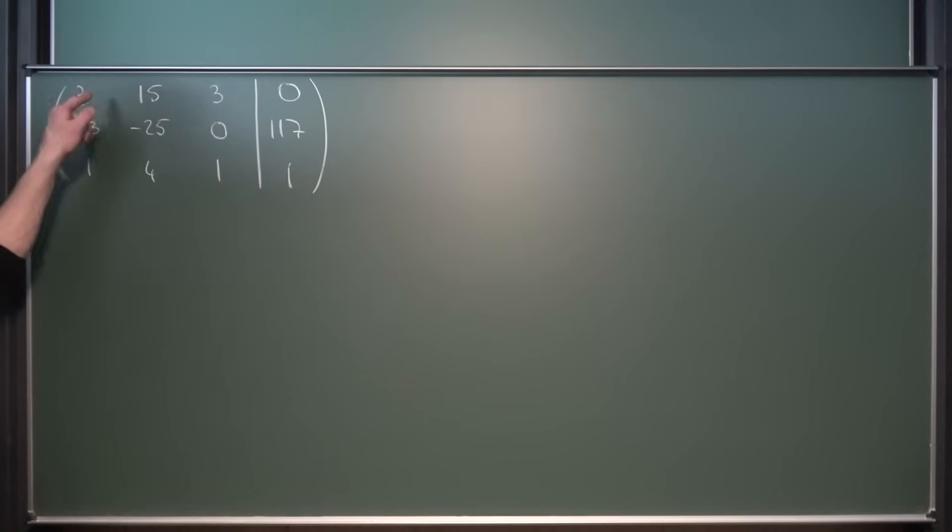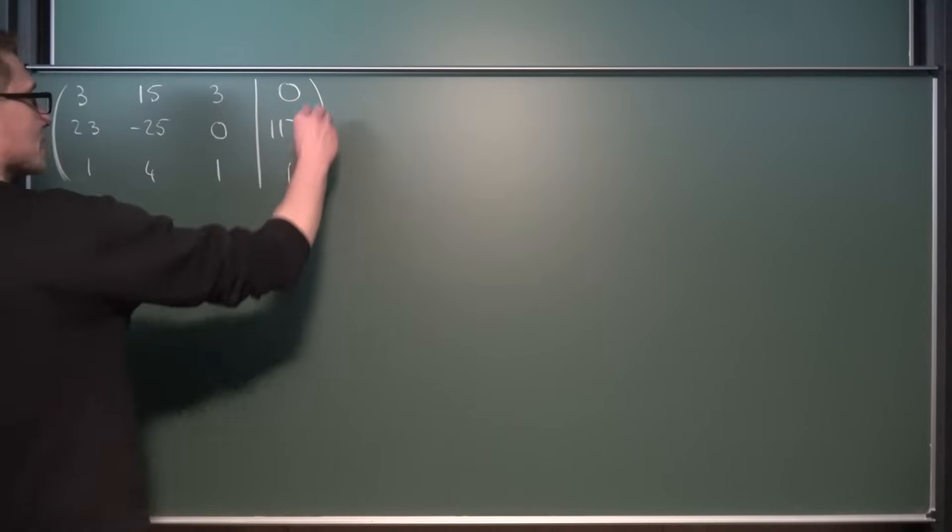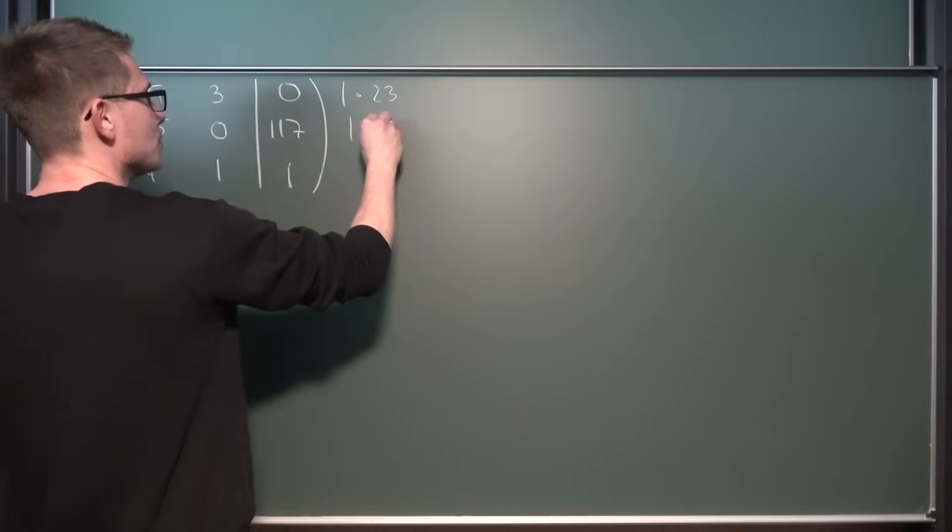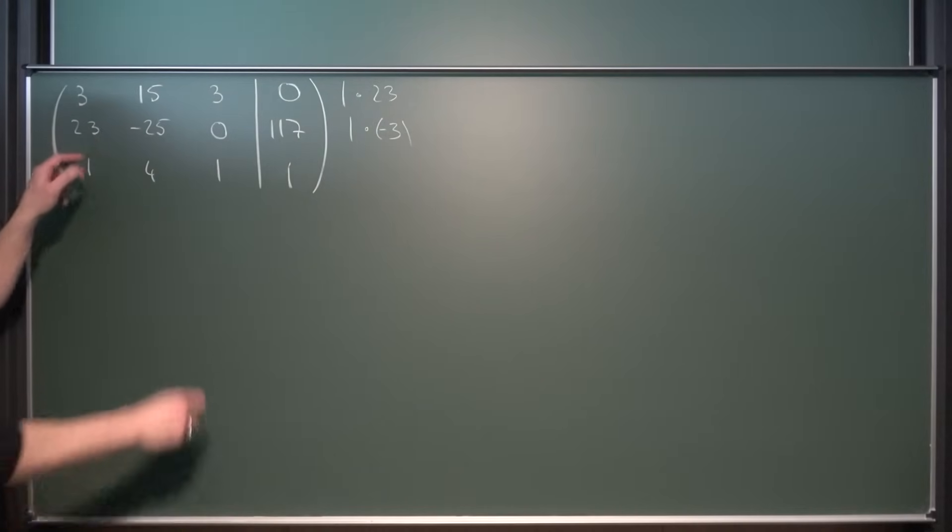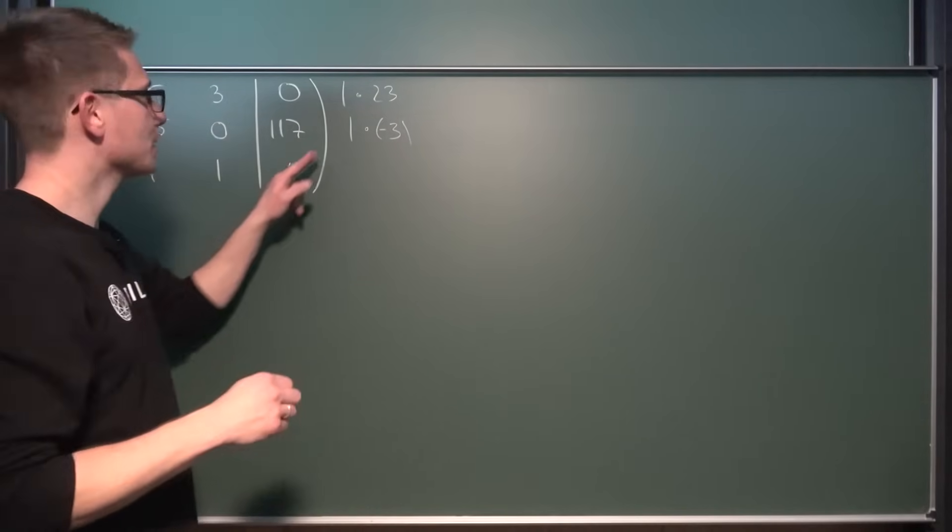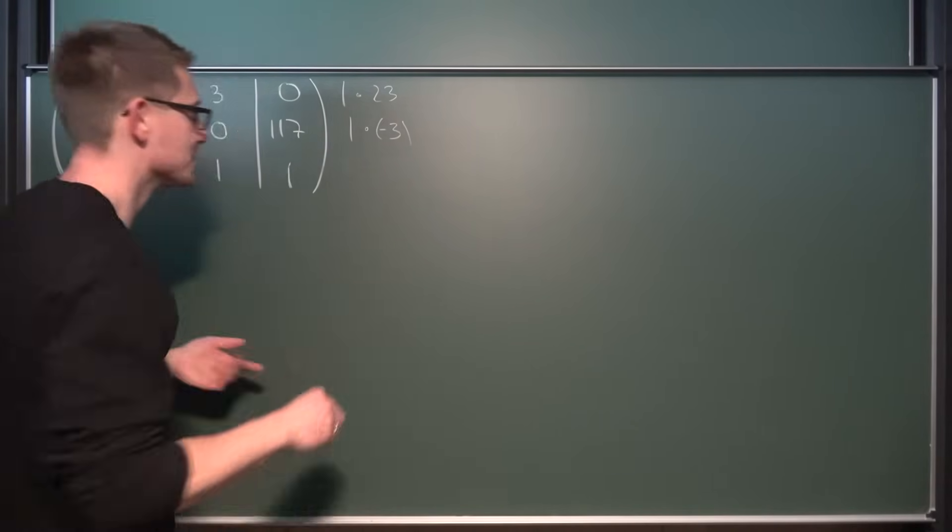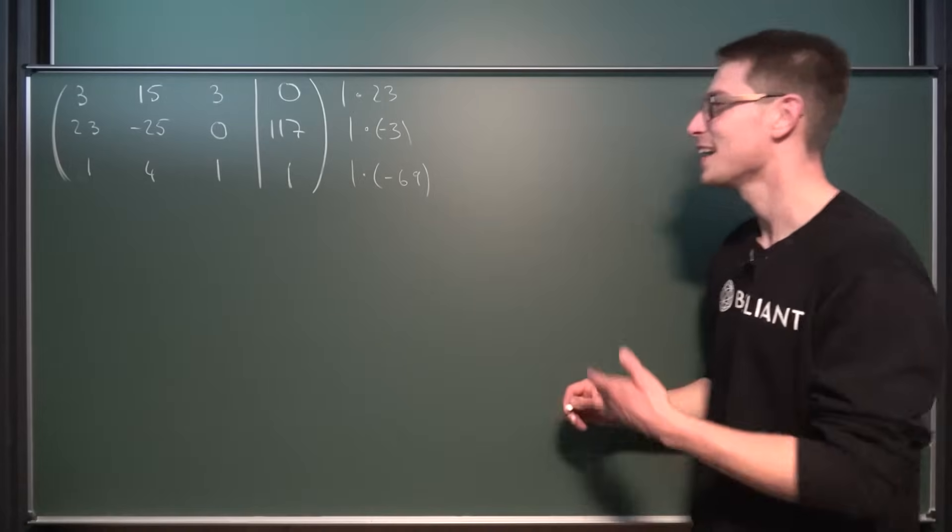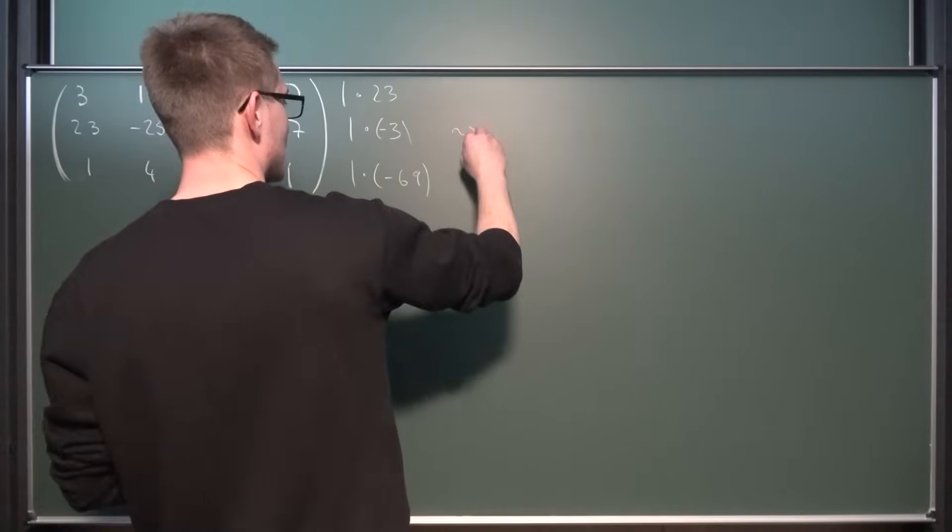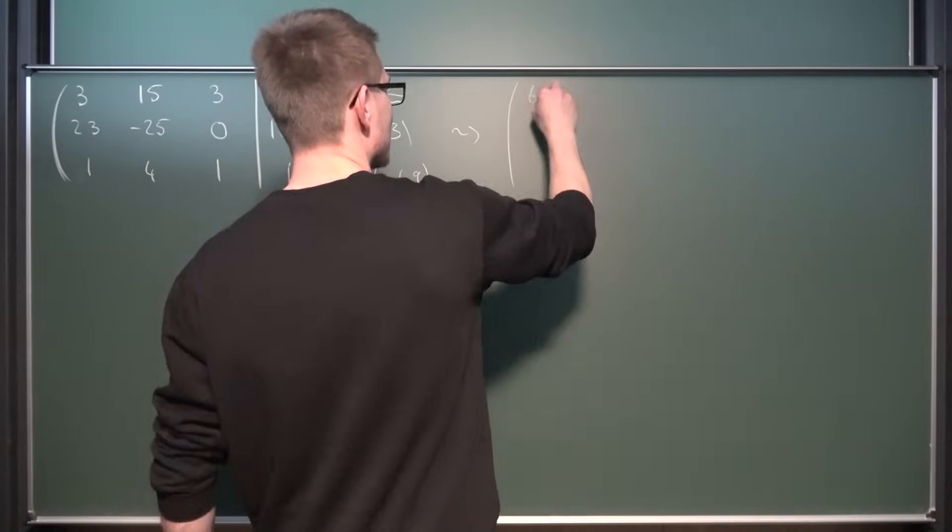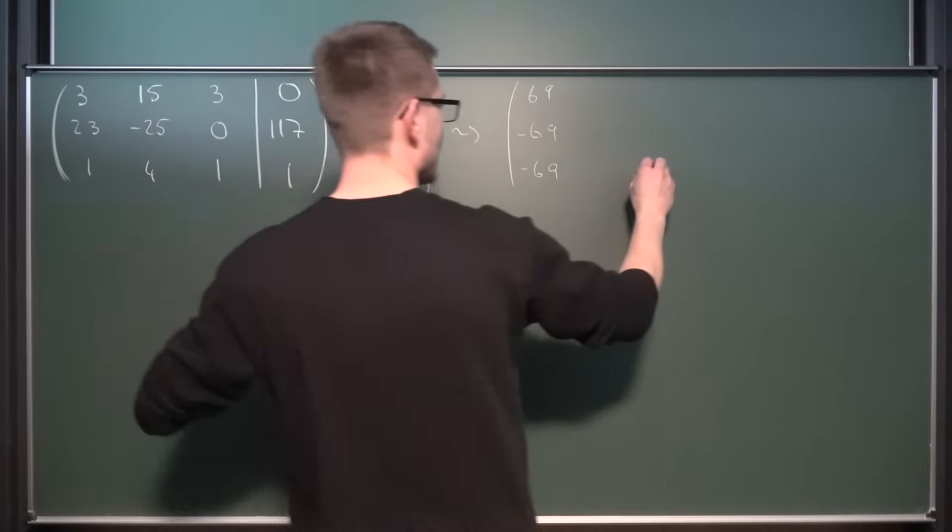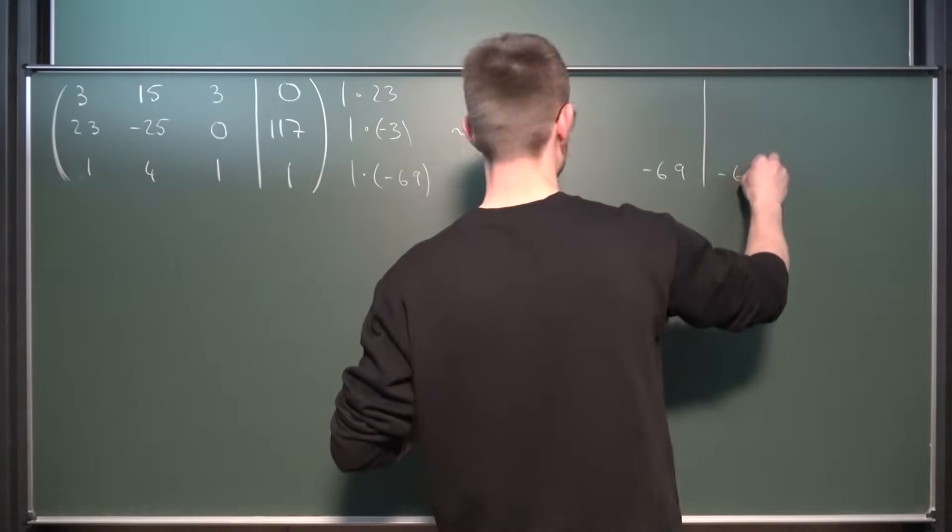What is the least common multiple of those? Well, one is trivial, but three and 23 multiplied together, obviously. So we are going to multiply the first row by 23, the second row by negative three, because we want to get the additive inverse. And the other one, the last one by 3 times 23 is 69. That is very nice. How come that this is part of the matrix?